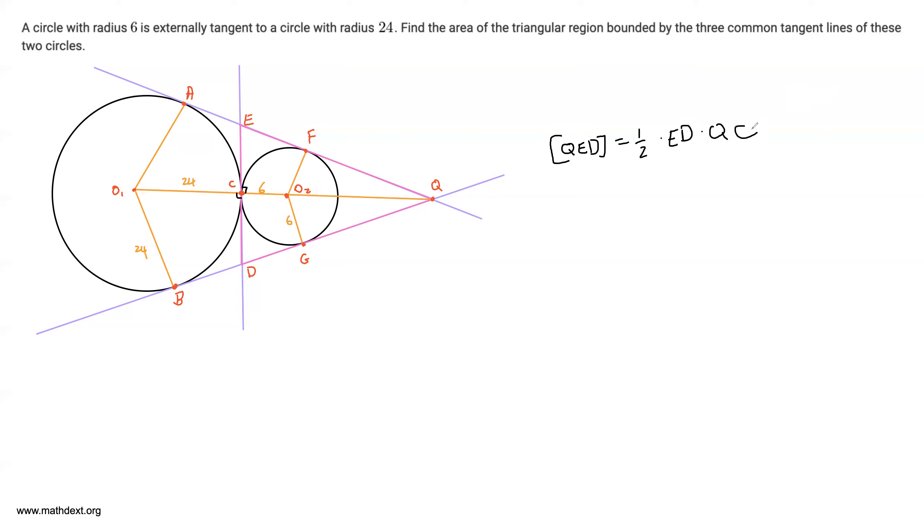Let's start with finding QC, because we already have part of it is 6. So what I'm going to do is I'm going to label QO2 with a variable. Let's call QO2 x. This segment is x. And I'm going to go ahead and label some other right angles. This angle is right because O2F is perpendicular to this tangent, and O1A is perpendicular to the same tangent, so this is a right angle as well.